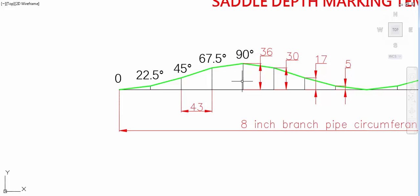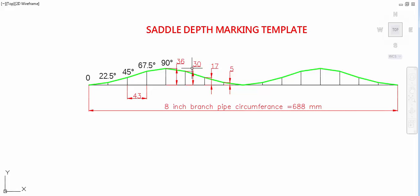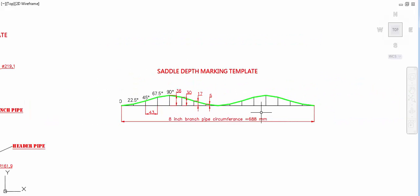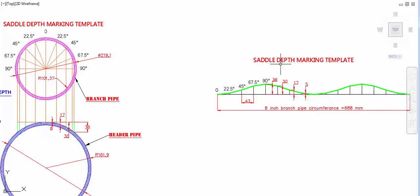Then 90 degree, 36 mm. So similarly, we have to mark all four sides. Then connect all the points. Now we will get the saddle depth for that, so we can cut this area.